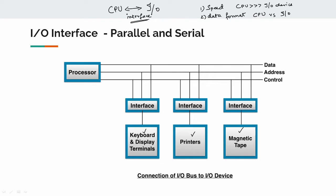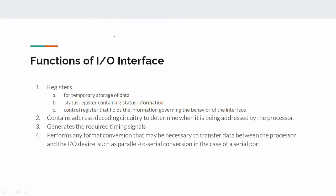So what is the diagram of IO interface? Input-output devices connect through the interface. The interface is used to connect a device with a specific format to the processor. The connection uses buses — data bus, address bus, and control bus. So the functions of the IO interface are as follows.